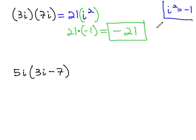i squared is negative 1. Other than that, treat the i like any other variable. So if we have a multiplication problem, such as 5i times parentheses 3i minus 7, just like we would distribute if those were x's, we can distribute with the i's.